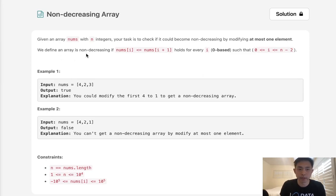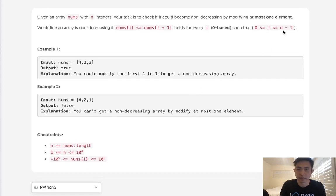We define an array as non-decreasing if nums[i] is less than or equal to nums[i+1], and this holds for every i such that i is between 0 and n minus 2. The reason why it's n minus 2 is because we're looking at i plus 1, but we can change that to say i minus 1 as well, starting at 1 to n minus 1.